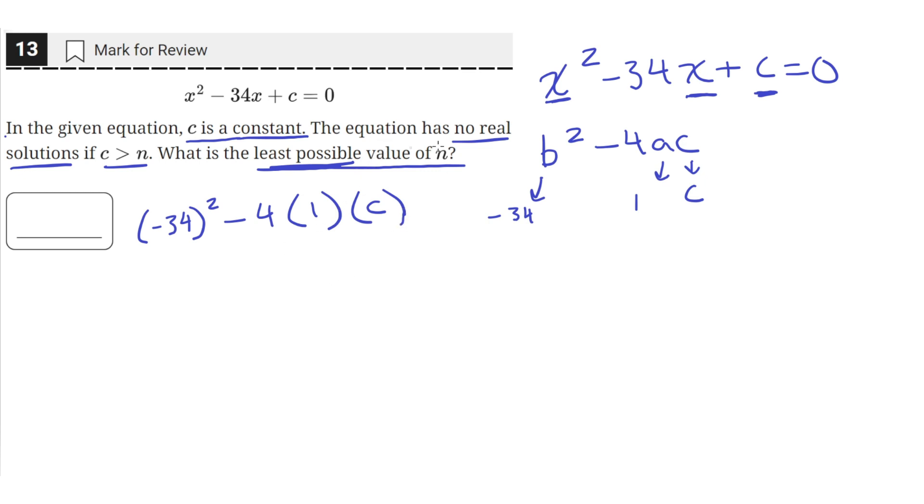And in order for this equation to have no solution, the discriminant has to be less than 0. Because when the discriminant is equal to 1, that means there's 1 solution.